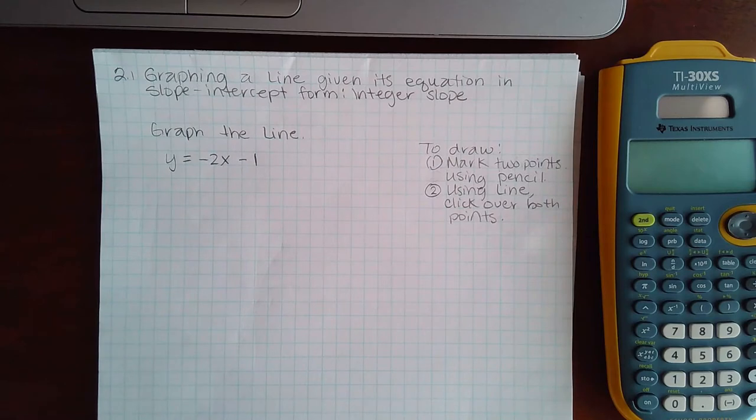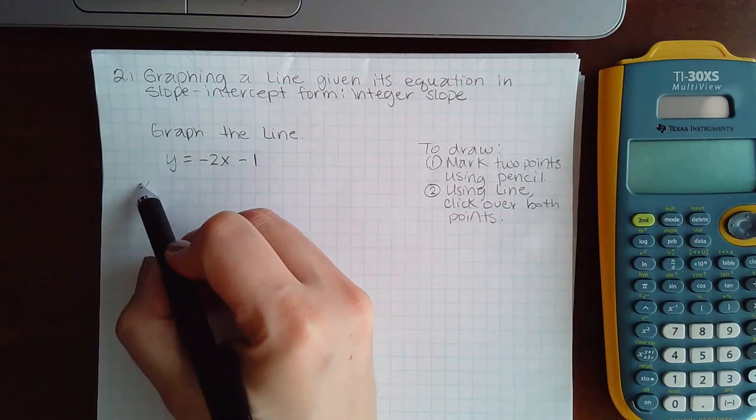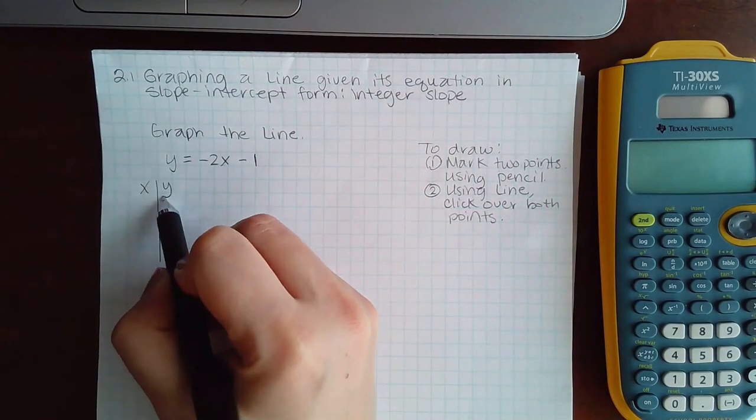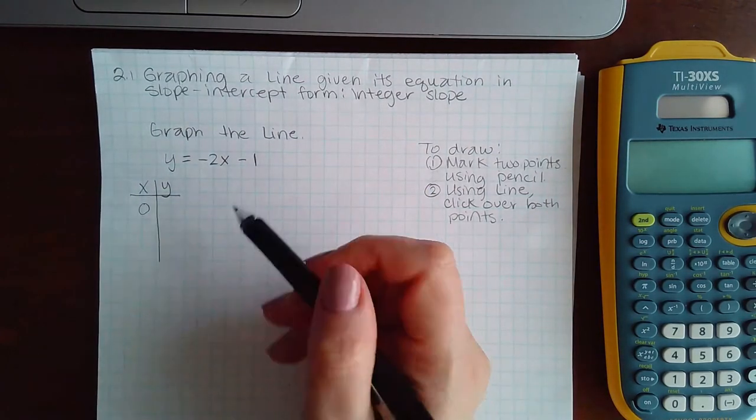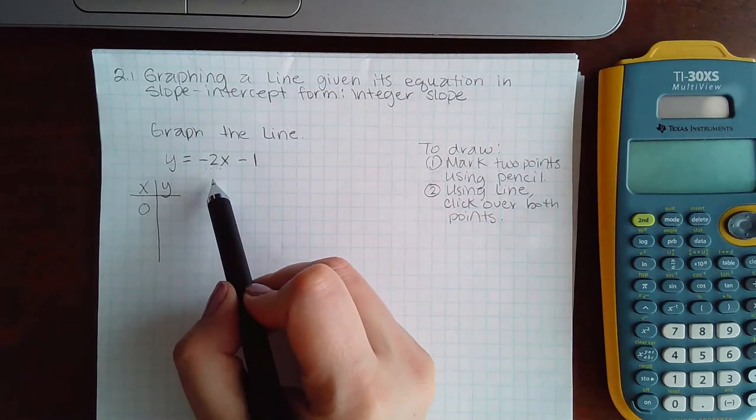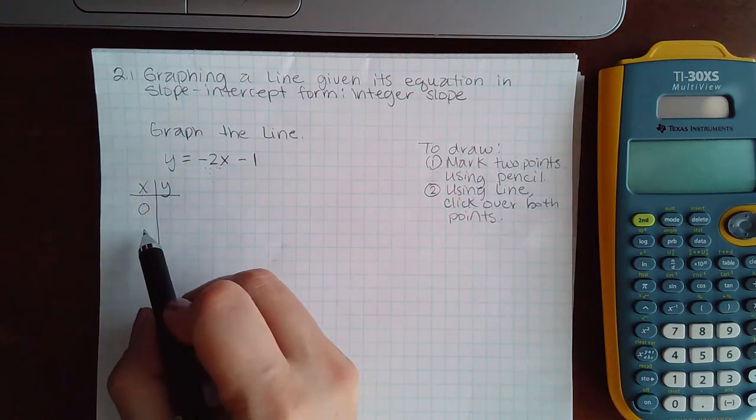Here we're going to graph the line. I'm going to do the same exact process as we did for the other type of line. I'm going to use 0 for x, and then my denominator here is 1 in front of the x, so I'm going to use 1.